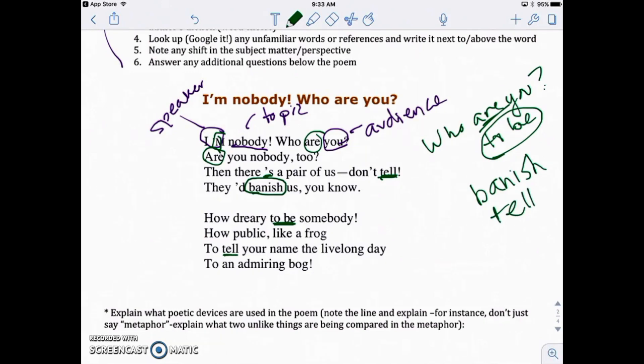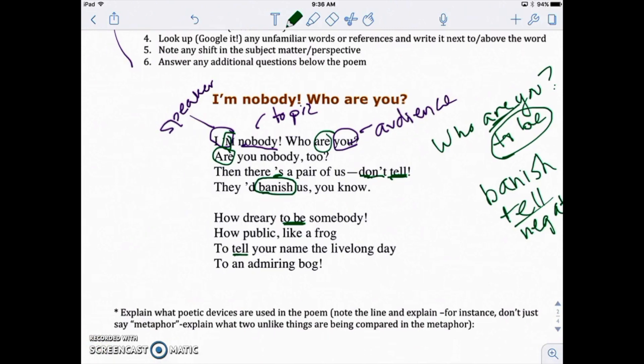And notice that to tell, is that a positive or a negative thing? That's generally a negative thing, right? Don't tell. It says do not, do not tell. And then over here to tell your name, and it's talking about how dreary it is, how public to tell. So this in general, this verb here is a negative verb. Okay. And so is the word banish as well, right? We've got two negative verbs. Banish and to tell is negative in this context.